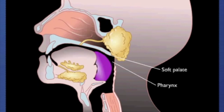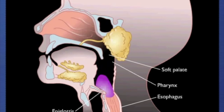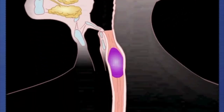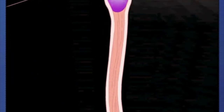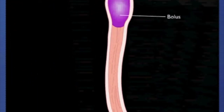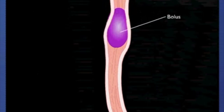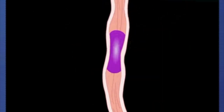Food passes over the epiglottis, which prevents food entry into the respiratory system, and then into the esophagus, which connects the pharynx to the stomach. The one-way movement of the food mass, now called a bolus, is controlled by wave-like involuntary muscle contractions — this movement is known as peristalsis.